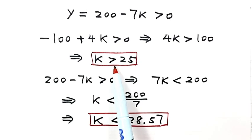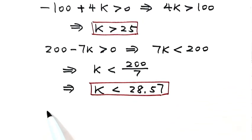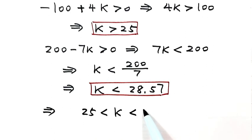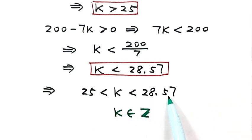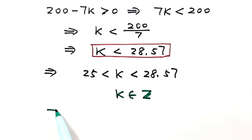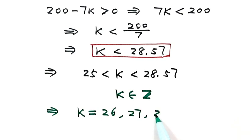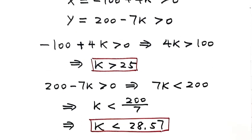Combining these two results, we have k greater than 25 and less than 28.57. Because k must be an integer, the integers between 25 and 28.57 are 26, 27, and 28. So k equals 26, 27, or 28. Now let's substitute each of these values into the general solution one by one.